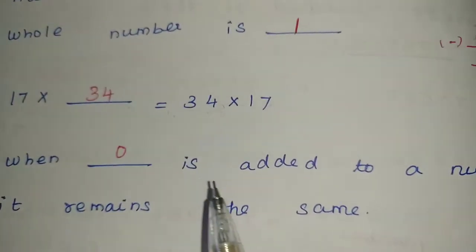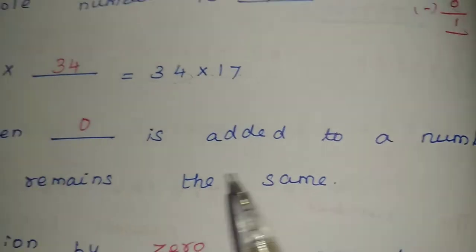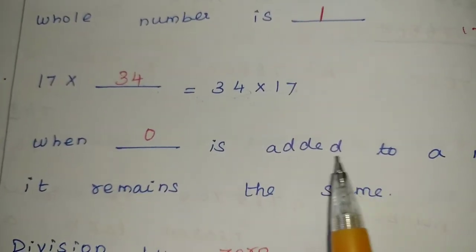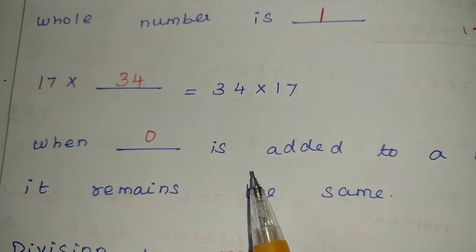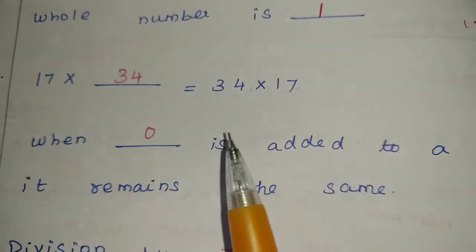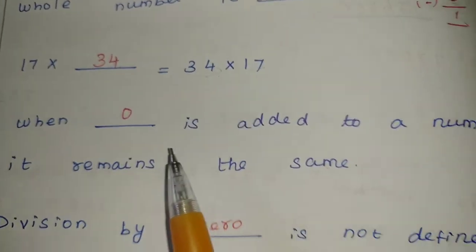Next, when blank is added to a number, it remains the same. So, which number when added gives the same number? Yes, 0. When 0 is added to any number, which number will come? That same number will come.